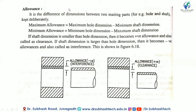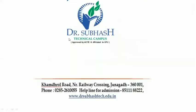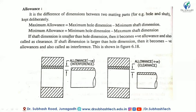Allowance is the difference in dimensions between two mating parts - for example, a hole and a shaft - that is kept deliberately. Unlike tolerance which accounts for machining errors, allowance is intentionally decided in advance to ensure the mating parts function correctly.